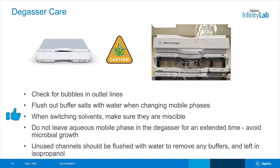Don't leave aqueous mobile phases in the degasser for extended periods of time to avoid microbial growth. Unused channels should be flushed free with water to prevent crystallization of any buffers, and then left in isopropanol. Isopropanol is a more viscous solvent, which can help push out tiny bubbles that can be stuck in your tubing.